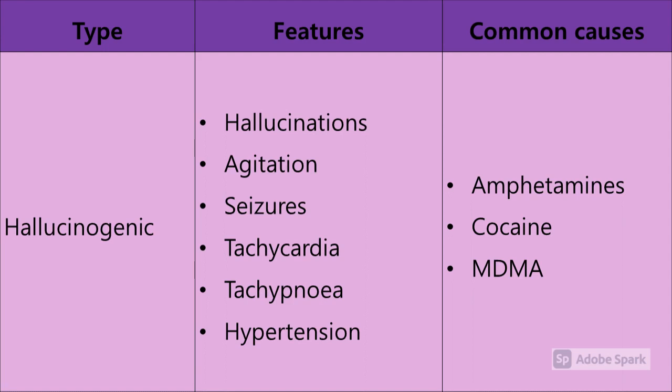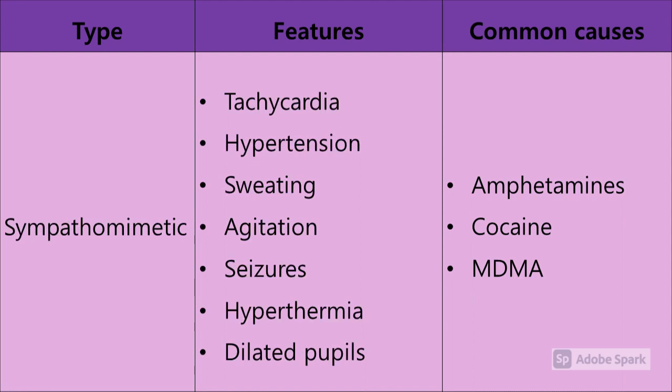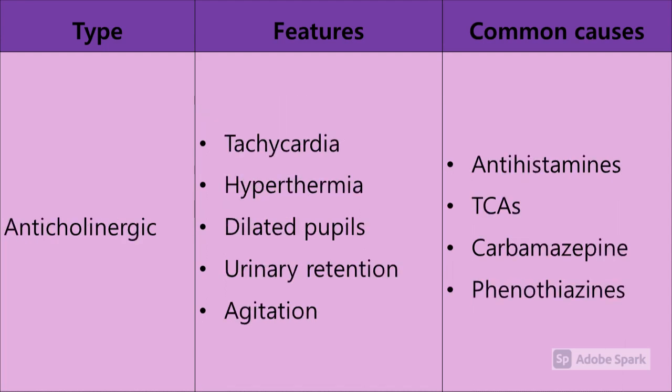Those same drugs can also cause the sympathomimetic toxidrome - tachycardic, hypertensive, sweating, agitated, with big dilated pupils. Then there's the anticholinergic toxidrome, which gives purely anticholinergic features: tachycardia, pyrexia, big pupils, possible agitation, and urinary retention.